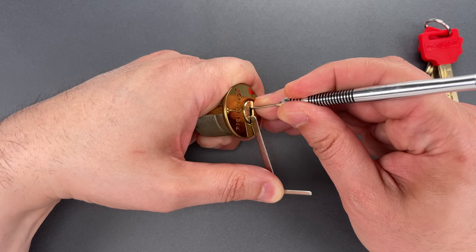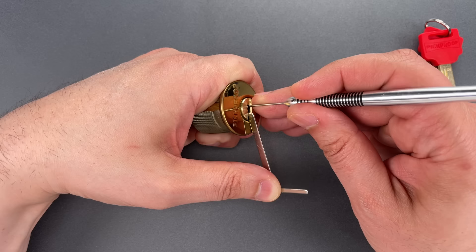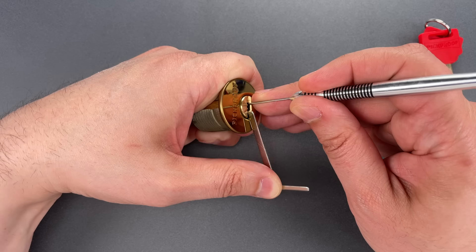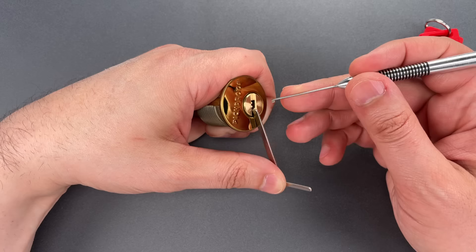Little click on number two. Number one is definitely binding. Click from the outer pin. The inner pin is binding very hard. Got a click there, and we dropped into a very deep false set. That probably means all we have left are inner driver pins.